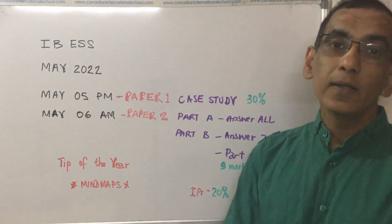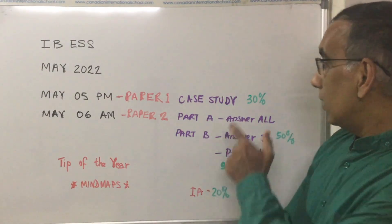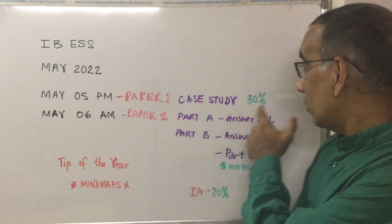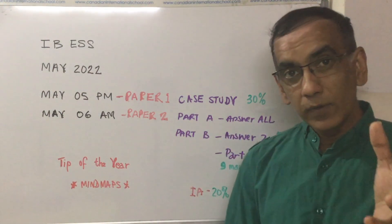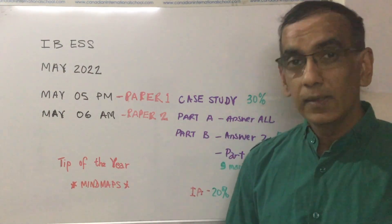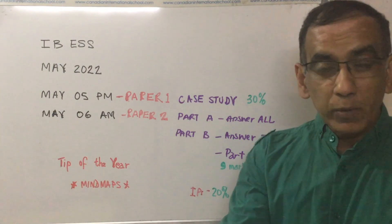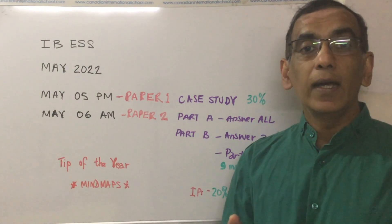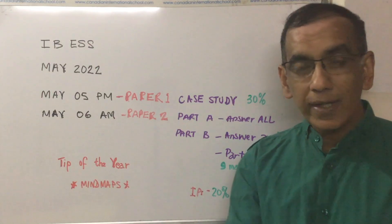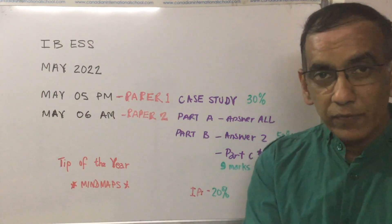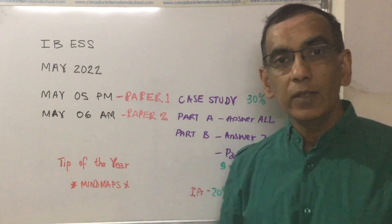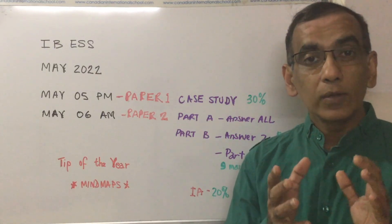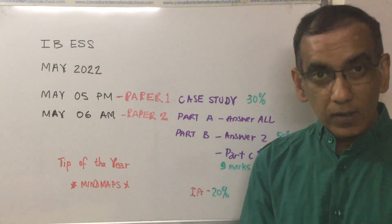Paper 1 is a case study. It's one hour long and it accounts for 30% of the total marks. You'll be provided with information in the resource booklet and you'll be required to extract some data from that booklet, combine it with some of your knowledge of ESS, and to complete the case study.